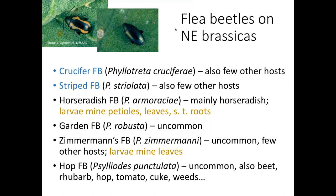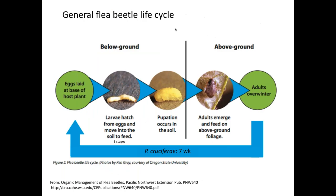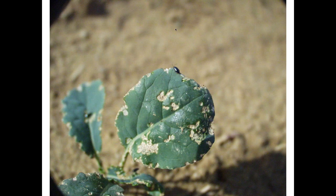It's worth noting that horseradish and Zimmerman flea beetles are unique in that they have larval stages that mine leaves, while the other species have larval stages in the root zone. Because they're out of sight, they're often out of mind. Regarding the life cycle: adults overwinter and in about a month we'll start seeing them feeding on spring transplants. They'll lay eggs at the base of plants, larvae hatch through three stages, then pupate. The summer generation of adults typically emerges around late June, and you can get overlap between overwintered adults and the next generation.